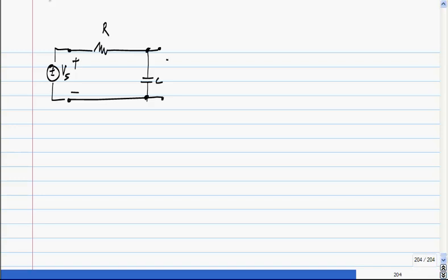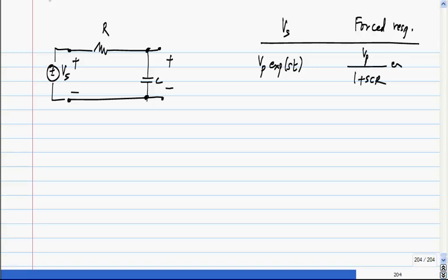For our particular circuit, if I apply Vs here I will get some response. So if Vs was Vp exponential st, the first response was... Clearly Vp exponential j(ωt + φ), which is the same as Vp exponential jφ exponential j(ωt). So this whole thing is multiplying exponential j(ωt). This part is like that.